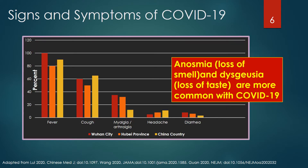This is a graph of signs and symptoms of COVID-19 patients from China. Fever was the most common symptom followed by cough, myalgia, arthralgia, headache, and diarrhea. Though there are no particular set of signs or symptoms that can reliably discriminate COVID-19 from other viruses, anosmia or loss of smell and dysgeusia or loss of taste are more common with COVID-19.